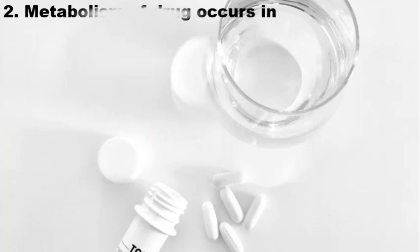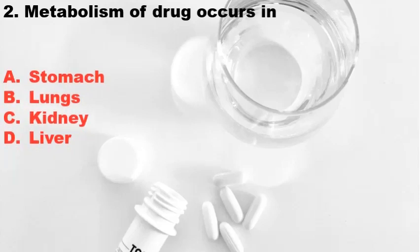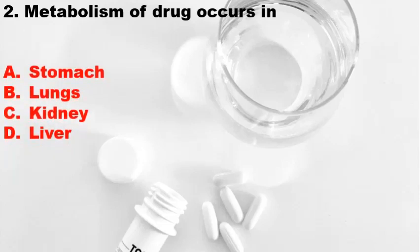Second question: Metabolism of a drug occurs in — Option A: Stomach, Option B: Lungs, Option C: Kidney, Option D: Liver. The correct answer is Option D, Liver.